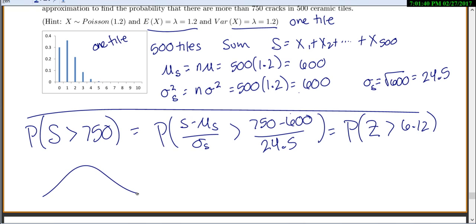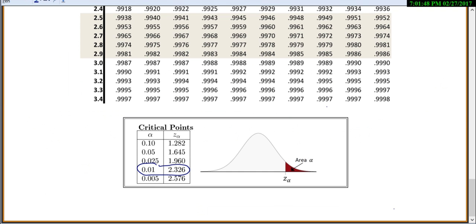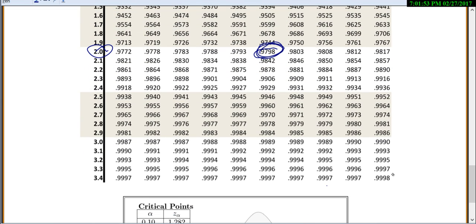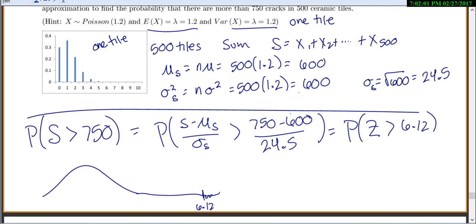Here's my graph. Now 6.12, it turns out that 6.12 is way over here, and I'm looking for the area to the right. If you go to your table and try to look up 6 as a Z, your table only goes up to 3.49, so 6 is somewhere way down here, so the area to the left must be really close to 1, or the area to the right is really close to 0. So this is basically 0, it was off the charts.